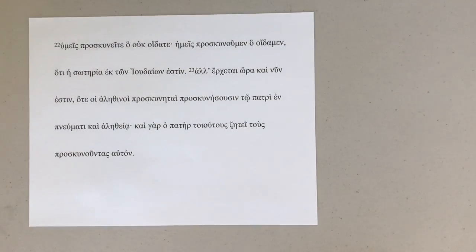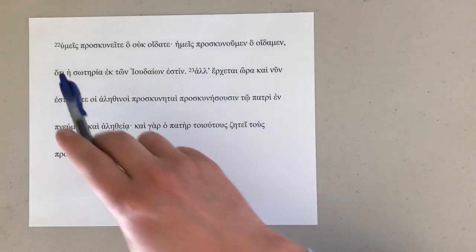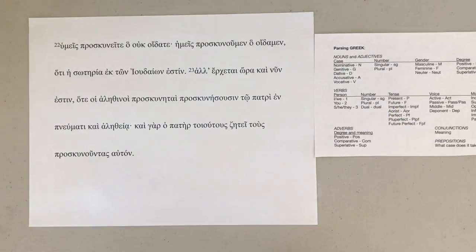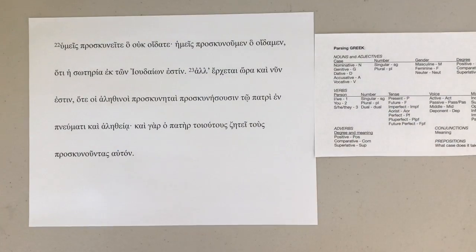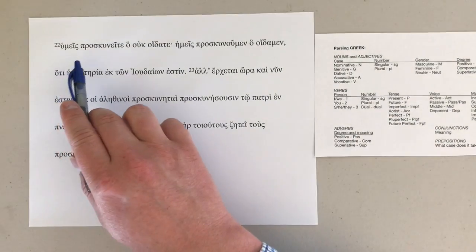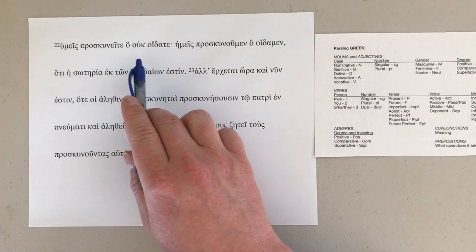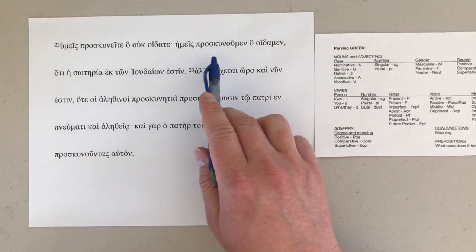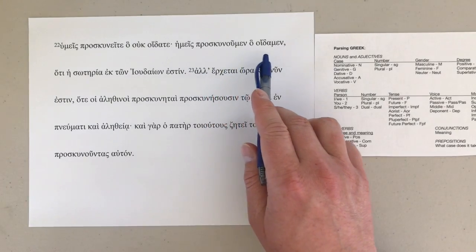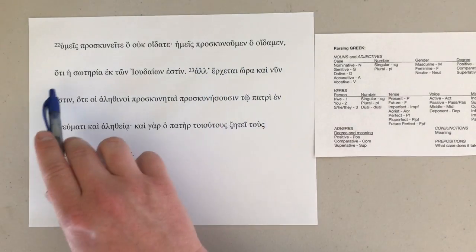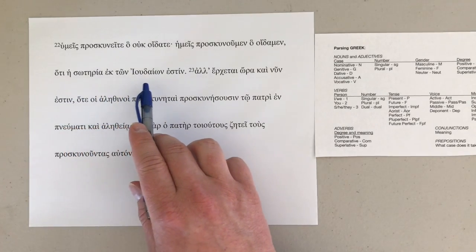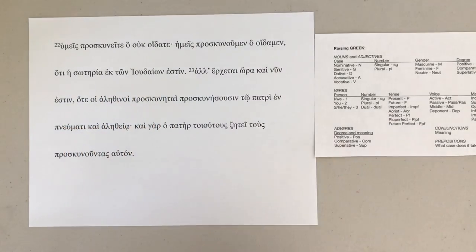Today we're just going to be doing verse 22 — it's a pretty short one, which works best with my schedule honestly. Here is the rubric, everything we're looking for as we go through the text. Let's get started. 'Humeis proskuneite ho ouk oidate, hemeis proskunoumen ho oidamen, hoti hei soteria ek tōn Ioudaiōn estin.' There we go.